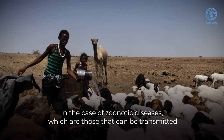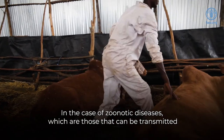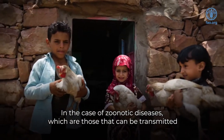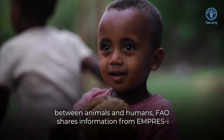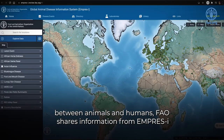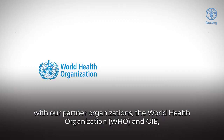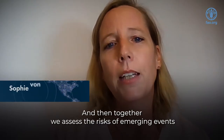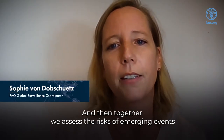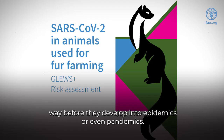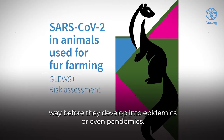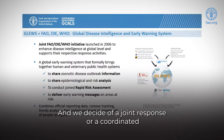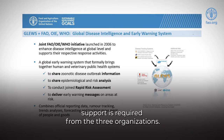In the case of zoonotic diseases, which are those that can be transmitted between animals and humans, FAO shares information from EMPRES-i with partner organizations WHO and OIE, the World Organization for Animal Health. Together we assess the risks of emerging events well before they develop into epidemics or even pandemics, and we decide if a joint response or coordinated support is required from the three organizations.